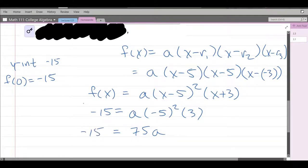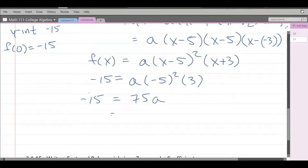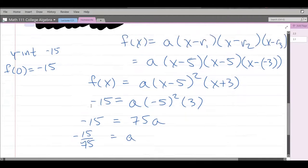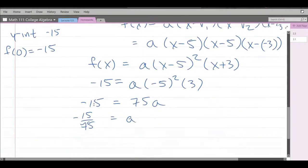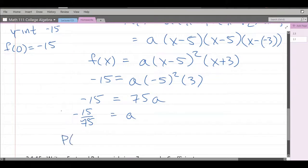And we're almost done, just divide both sides by 75. So it's negative 15 over 75 is a. Let's just make sure we're answering this correctly. P of x, so they're calling the function P of x, that's fine.